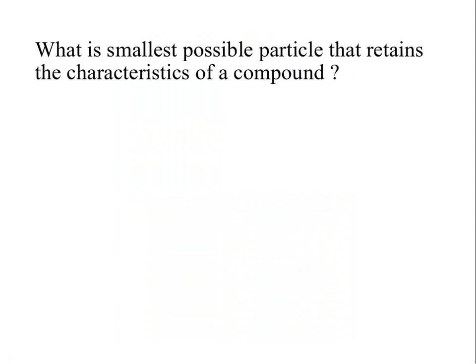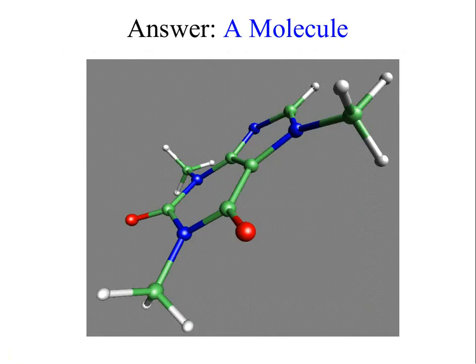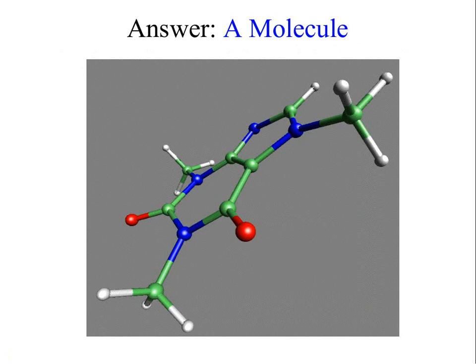What would be the smallest possible particle that would retain the characteristic of a compound? Well, that's called a molecule. There's a model of some molecule and that would be the smallest piece of that particular compound. If you broke it in half, it wouldn't be that compound anymore.